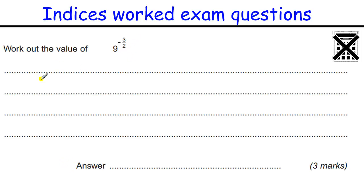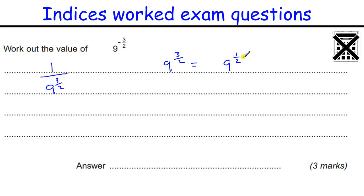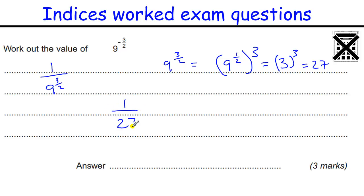9 to the minus three-halves — a three-mark question. The minus sign means 1 over 9 to the three-halves, and you pretty much always get a mark for rewriting it that way. 9 to the three-halves is 9 to the one-half cubed. The square root of 9 is 3, so 3 cubed is 27, giving 1 over 27.